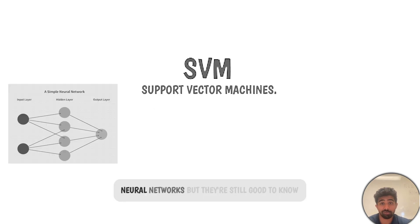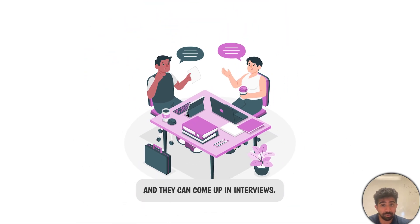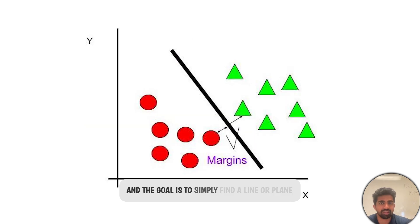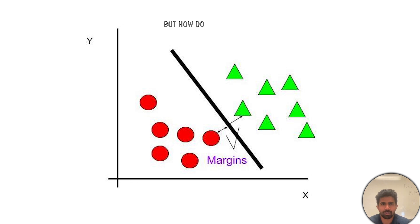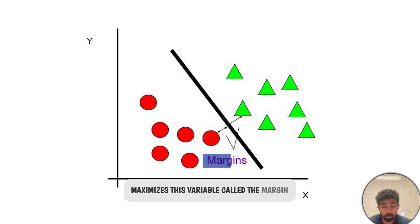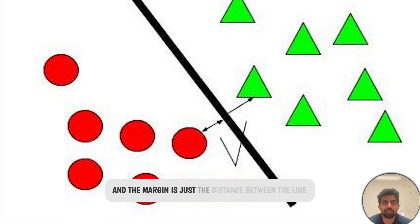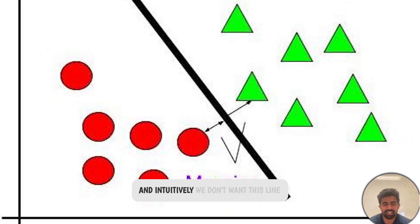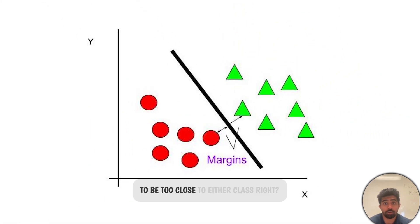Next up is SVMs or Support Vector Machines. These aren't as cool as neural networks, but they're still good to know and they can come up in interviews. They're used for supervised learning, and the goal is to simply find a line or plane that separates our data into different classes. But how do we actually find this line? We want to find the line that maximizes the margin — the margin is just the distance between the line and the closest data points on either side. Intuitively, we don't want this line to be too close to either class — you want to find a sweet spot.